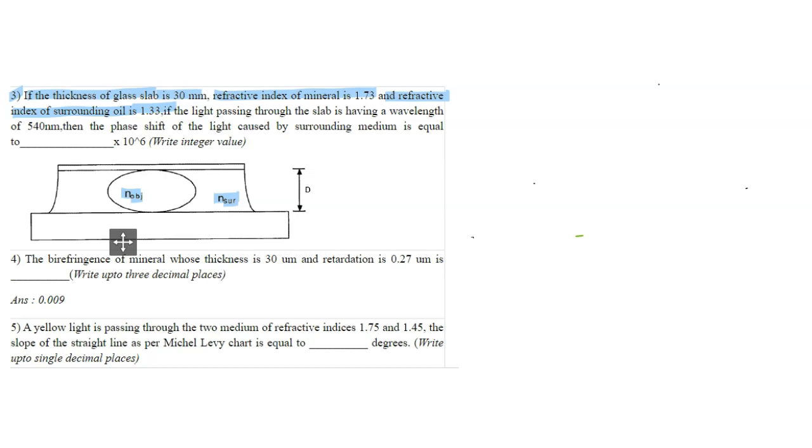The refractive index of the slab is 1.73. If light passing through has a wavelength of 540 nanometer, then the phase shift by the surrounding medium equals blank times 10^6. You have to write the integer value.